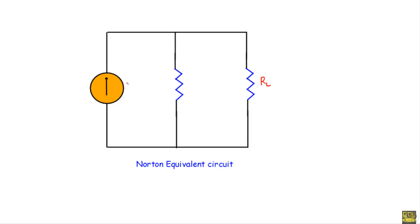If we connect the Norton current IN in parallel with Norton resistance RN and the load resistor RL, that will be our Norton equivalent circuit. Our load resistor is equal to 47 kilo ohm. Now I will show you how to calculate the Norton resistance.